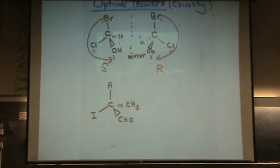I'm not going to draw the mirror image. I already know there's four different groups. So because there's four different groups, it's going to be chiral for sure. I just want to know if it's right, R or S.